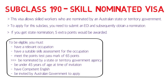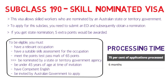To be eligible, all criteria are the same as 189, with one key difference: you must have a state or territory government nomination. The processing time is around four to six months, which is considerably less than the 189 visa, because having been nominated by the state means the government of Australia trusts you and wants to ensure you reach Australia as early as possible.